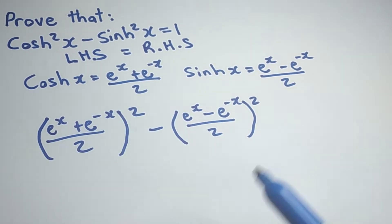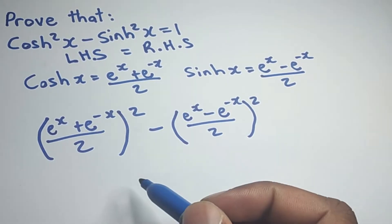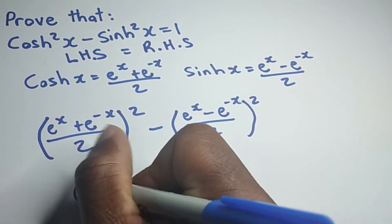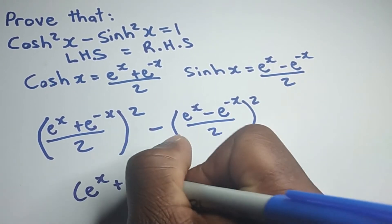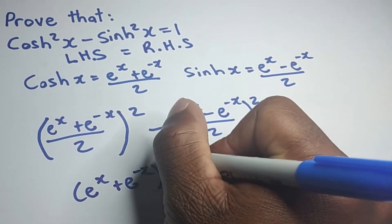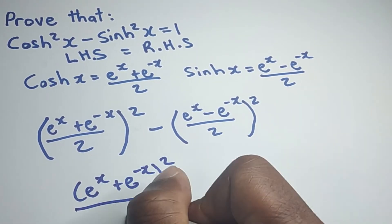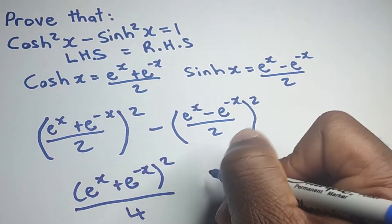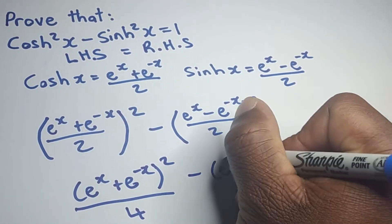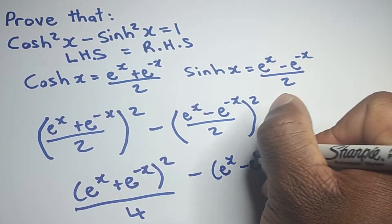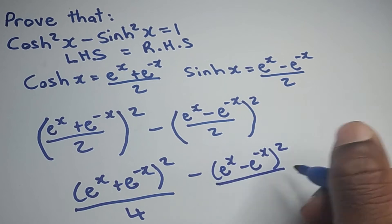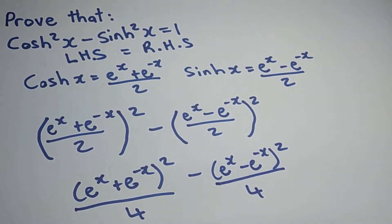When we are squaring a fraction, we square both the numerator and denominator. Which means we can rewrite this as e to the x plus e to the minus x, all squared over 4 — because 2 squared is 4. Minus, we can do the same thing over here: this would be e to the x minus e to the minus x, all squared over 4 as well.